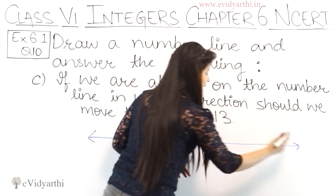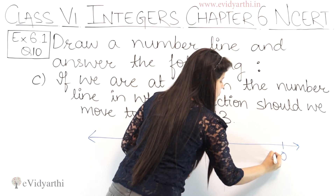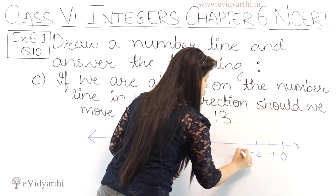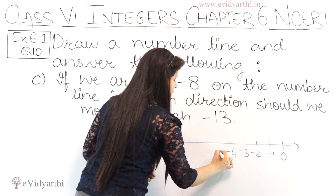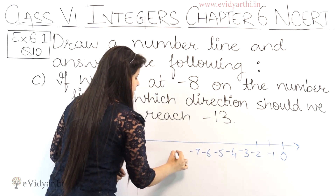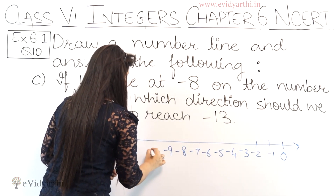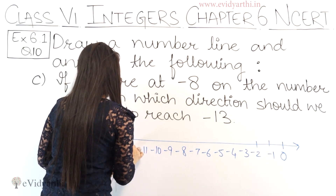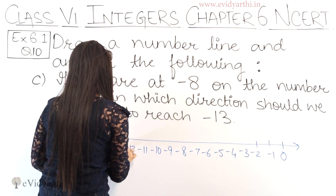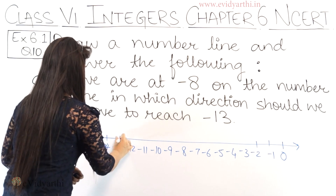We need to see the negative integers, so let's take 0 here. This will be minus 1, minus 2, minus 3, minus 4, minus 5, minus 7, minus 8, minus 9, minus 10, minus 11, minus 12, minus 13, and so on. All these points are plotted here.